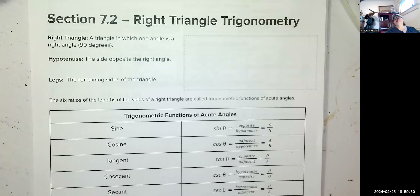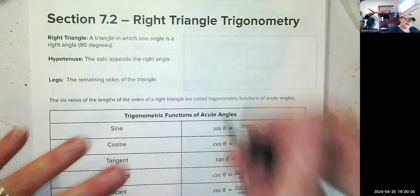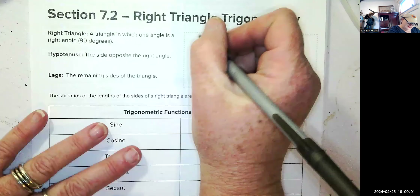Hey, let's cover section 7.2. It's right triangle trigonometry. A right triangle is a triangle in which one of its angles is a right angle, or 90 degrees.